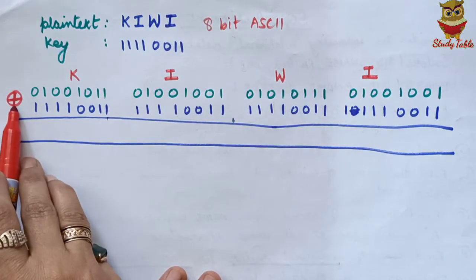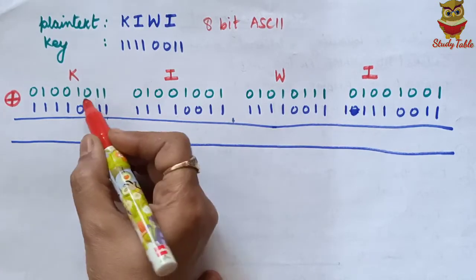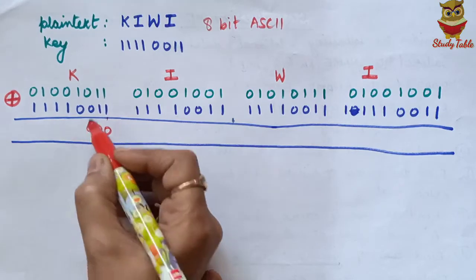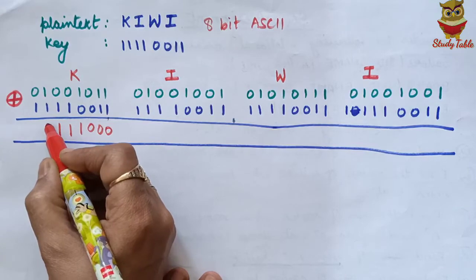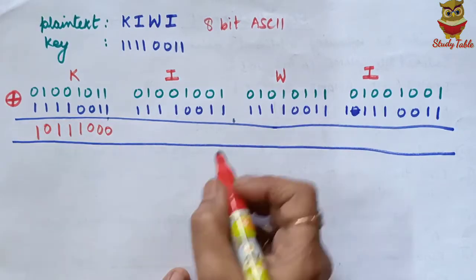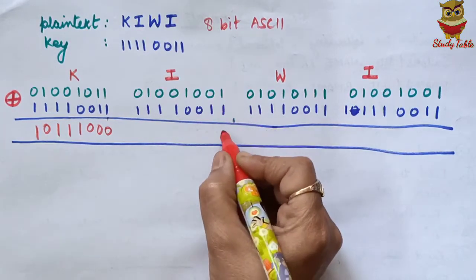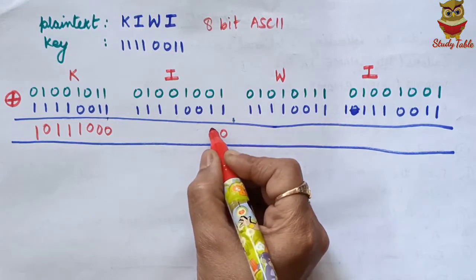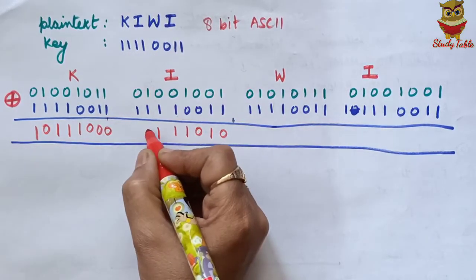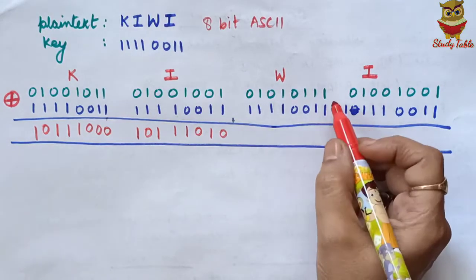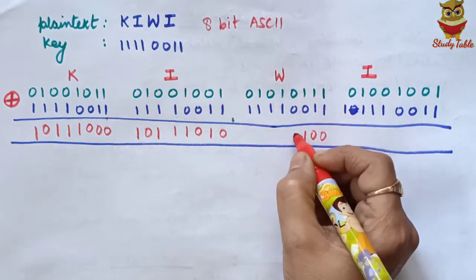Now let us apply the XOR operator. This is the exclusive OR operator. When both are 1, the output is 0. When values are different, the output is 1. When values are the same, the output is 0. Applying this bit by bit: for K XOR key, we get different values giving 1, same values giving 0, computing the full cipher text bit by bit for each character of KIWI.